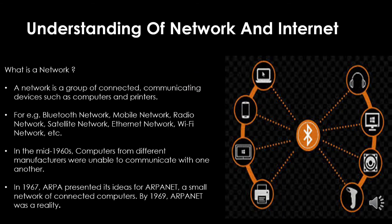The first question is: what is a network? A network can be of anything — like the network of people connecting to different communities, or the network of roads connecting to different cities. In the context of computing, a network is a group of connected communicating devices such as computers, smartphones, printers, and laptops. For example, if your smartphone is connected to your computer through Bluetooth, that is a Bluetooth network of two devices. Similarly, we can have all different kinds of networks, from mobile networks to satellite networks.